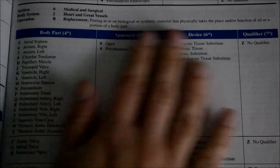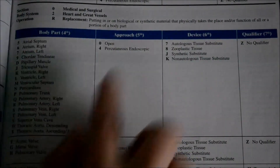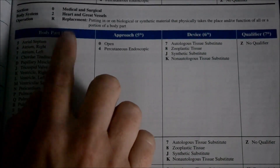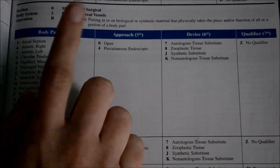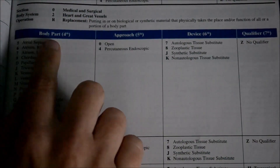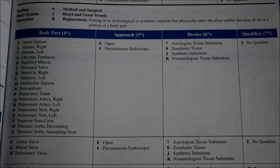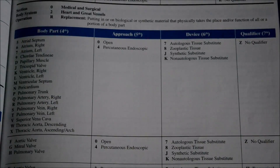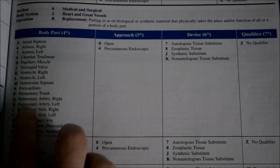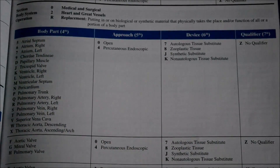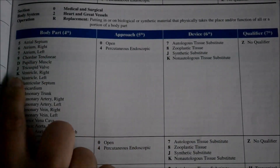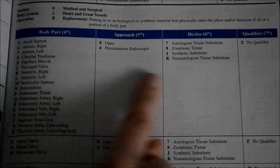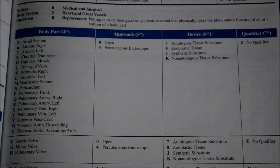Within the table, each column signifies a different character placement within your code. The fourth character placement is your body part, and that column gives you an entire list of all body parts available for this root operation within this body system. You look down until you find the body part you need, write down the number or letter associated with it, and then you must stay within that same row when filling out the rest of your code — you can't jump around.